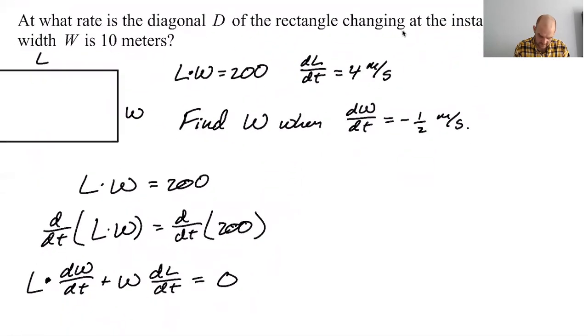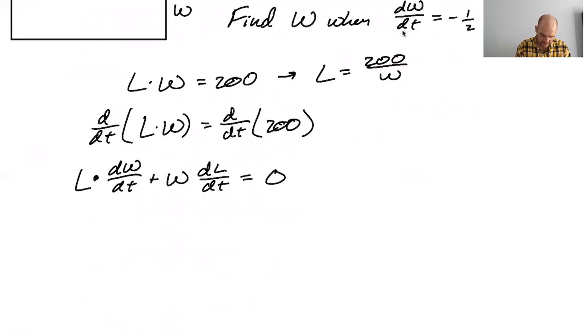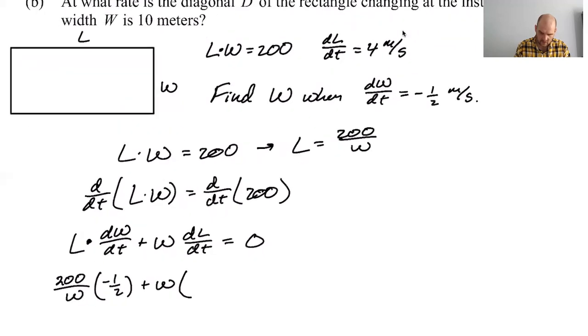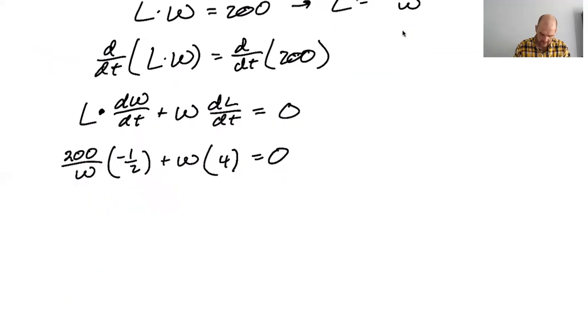So we can substitute a lot. We can go 200 over W times dW/dt at this instant is negative one half plus W. dL/dt is always four. So four equals zero. Okay.